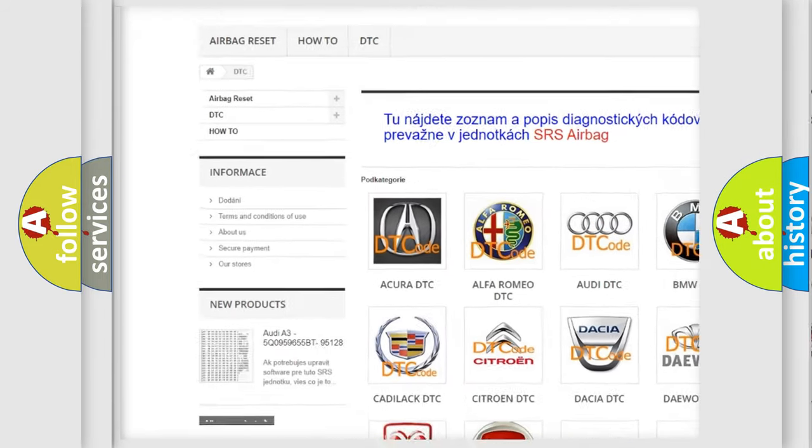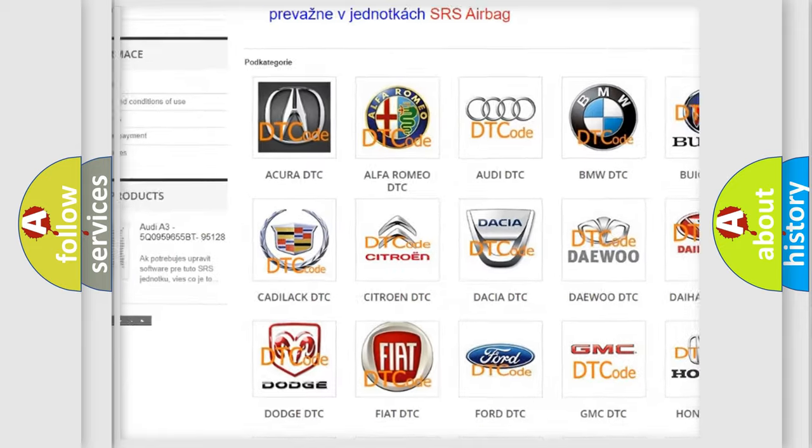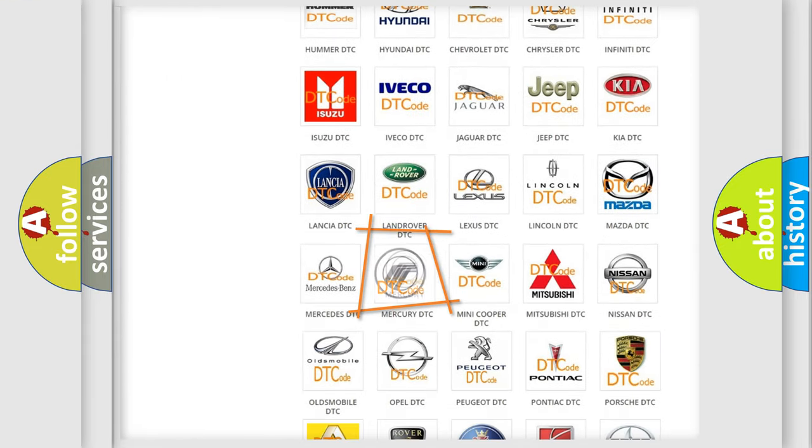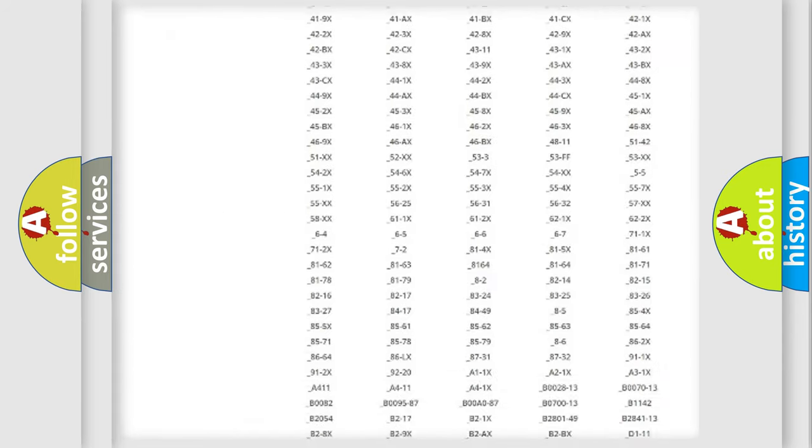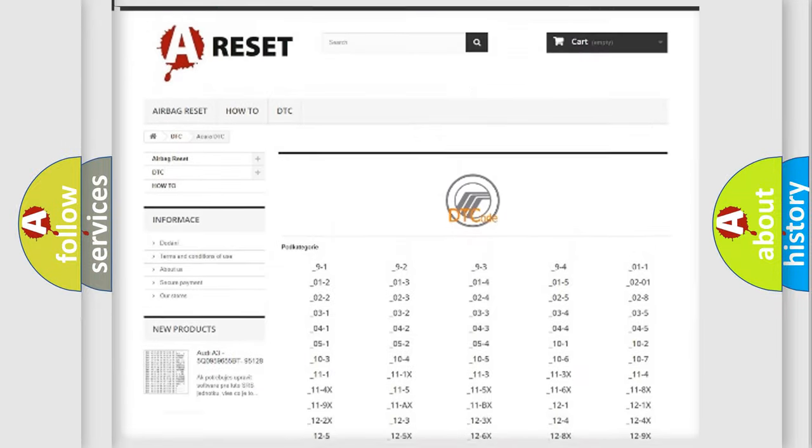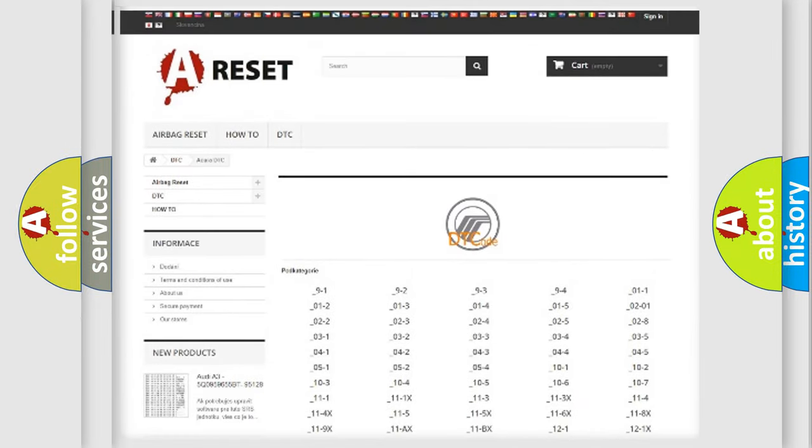Our website airbagreset.sk produces useful videos for you. You do not have to go through the OBD2 protocol anymore to know how to troubleshoot any car breakdown. You will find all the diagnostic codes that can be diagnosed in Mercury vehicles, and many other useful things.